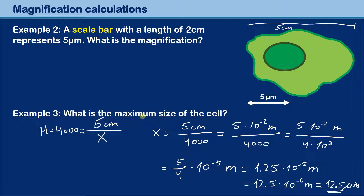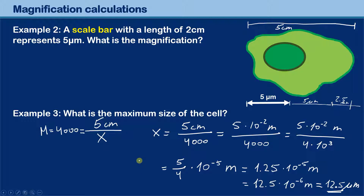12.5 times ten to the negative six meters equals 12.5 micrometers — that is the answer. The maximum size of the cell is 12.5 micrometers. As a common sense check: the scale bar spans five micrometers, another five micrometers gets you across, and a short remaining section is 2.5 micrometers. Adding them up gives 12.5 micrometers, confirming the answer.